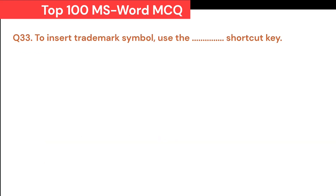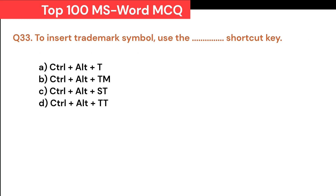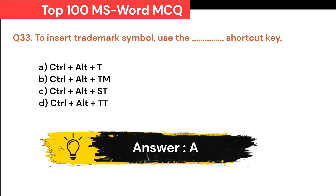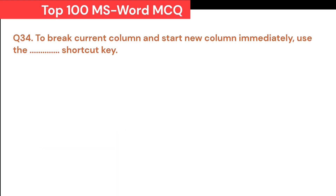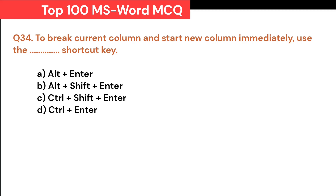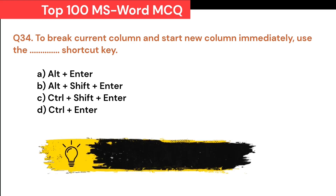To insert a trademark symbol, use the Dash shortcut key: A. Ctrl+Alt+T. B. Ctrl+Alt+TM. C. Ctrl+Alt+ST. D. Ctrl+Alt+TT. Correct answer is A. Ctrl+Alt+T. To break the current column and start a new column immediately, use the Dash shortcut key: A. Alt+Enter. B. Alt+Shift+Enter. C. Ctrl+Shift+Enter. D. Ctrl+Enter. Correct answer is C. Ctrl+Shift+Enter.